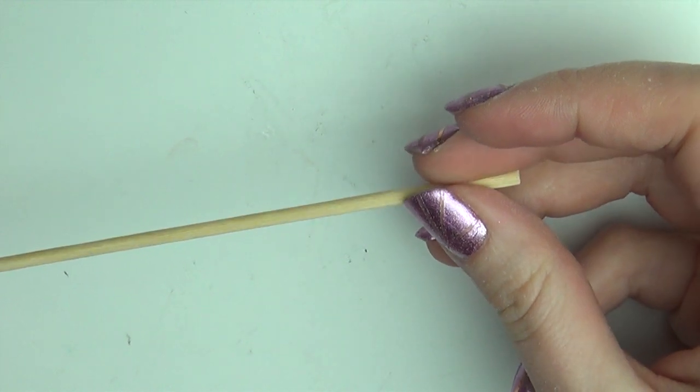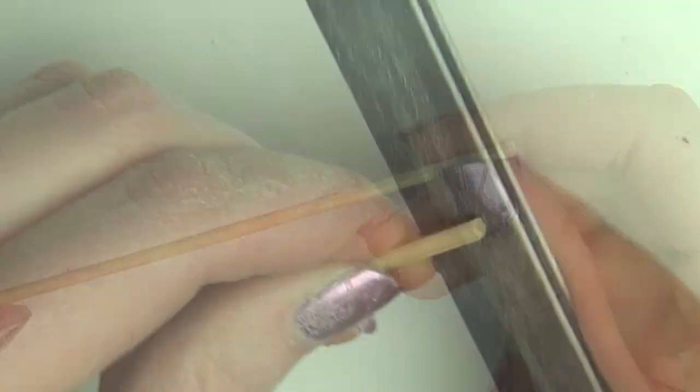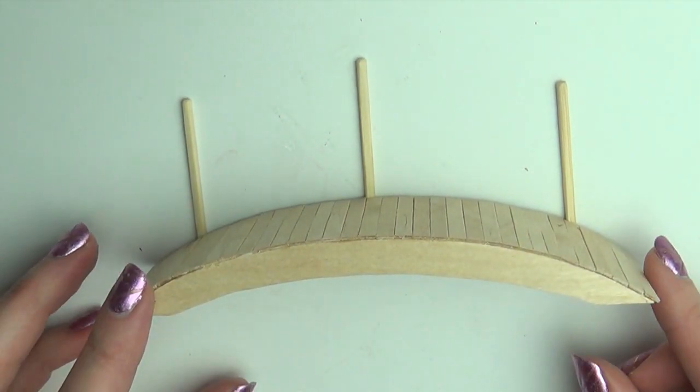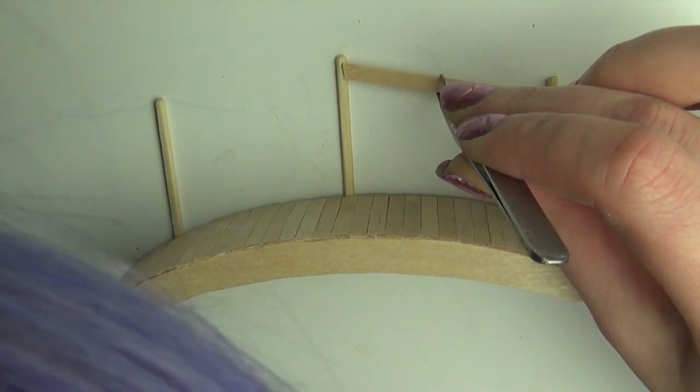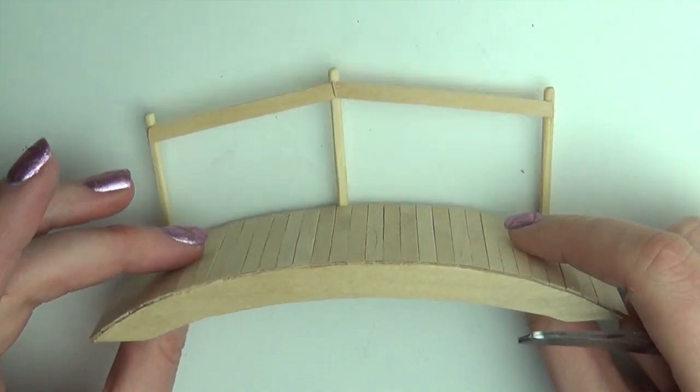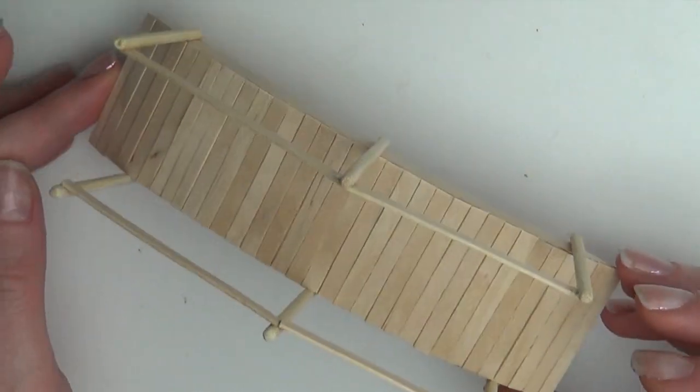To make the railing I used these small wooden skewers that I filed on one side to make them flat. Glue to the side and then connect it with another stirring stick. And as you can see my hair is currently purple. And that's the bridge done.